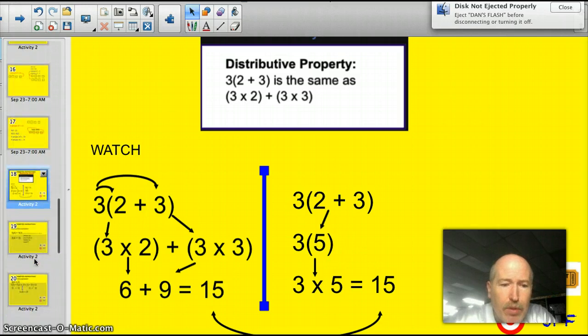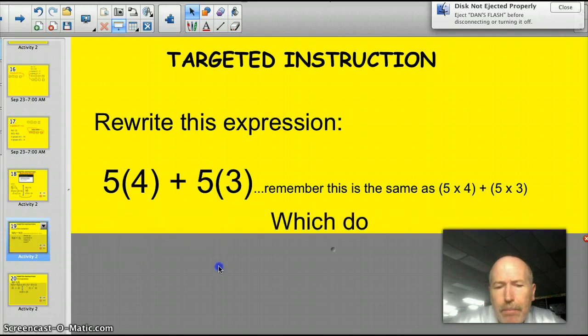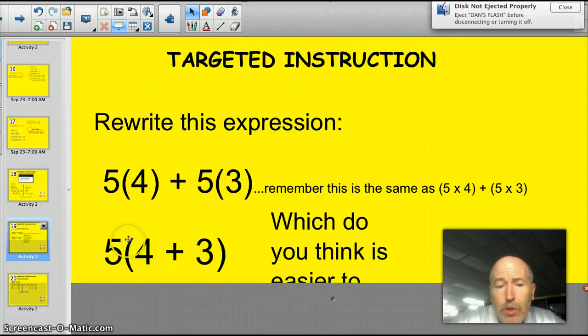Alright, let's take a look at a couple of examples. Alright, rewrite this expression. Go ahead and give it a shot and pause the video. I see dead people. I haven't said that for a while, so I thought I'd freak you out. Alright, here we go. See how you did. You can also write this then as 5 times a quantity of 4 plus 3.